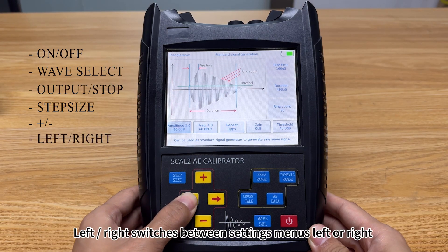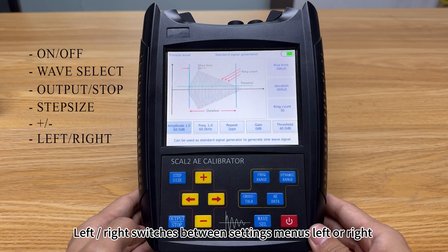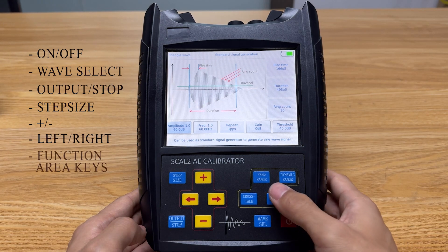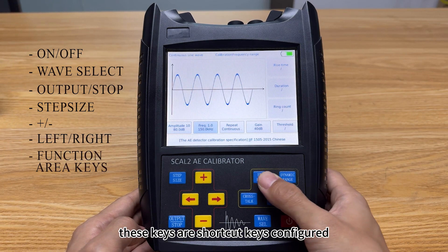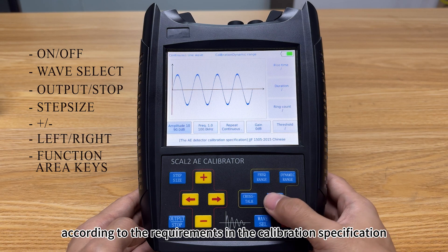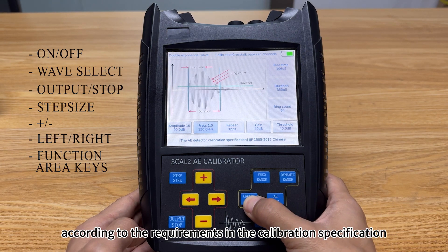Left and right switches between settings menus left or right. Function area keys are shortcut keys configured according to the requirements in the calibration specification.